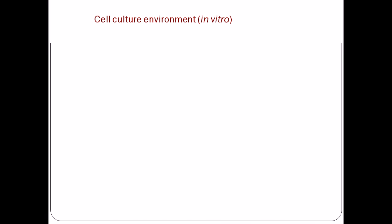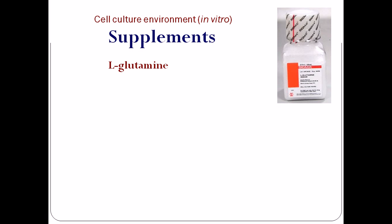Now we will discuss supplements added to these media. An example is L-glutamine, which is an essential amino acid not synthesized by the cell itself. It can act as an energy source in the citric acid cycle and is used in protein synthesis pathways. L-glutamine is unstable in liquid media, so it is added as a supplement over time so the cell can access it easily.